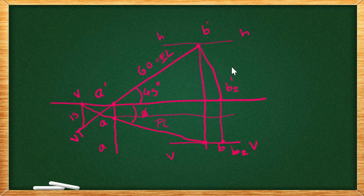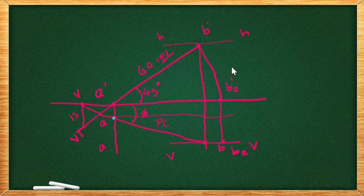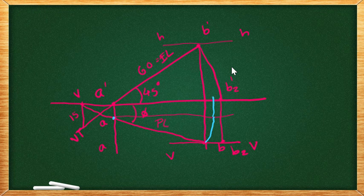With a as center, b as radius. Rotate this line towards this parallel line that we drawn. And extend this line straight using a straight line. And it will meet at this particular point. And it is called b1 dash.